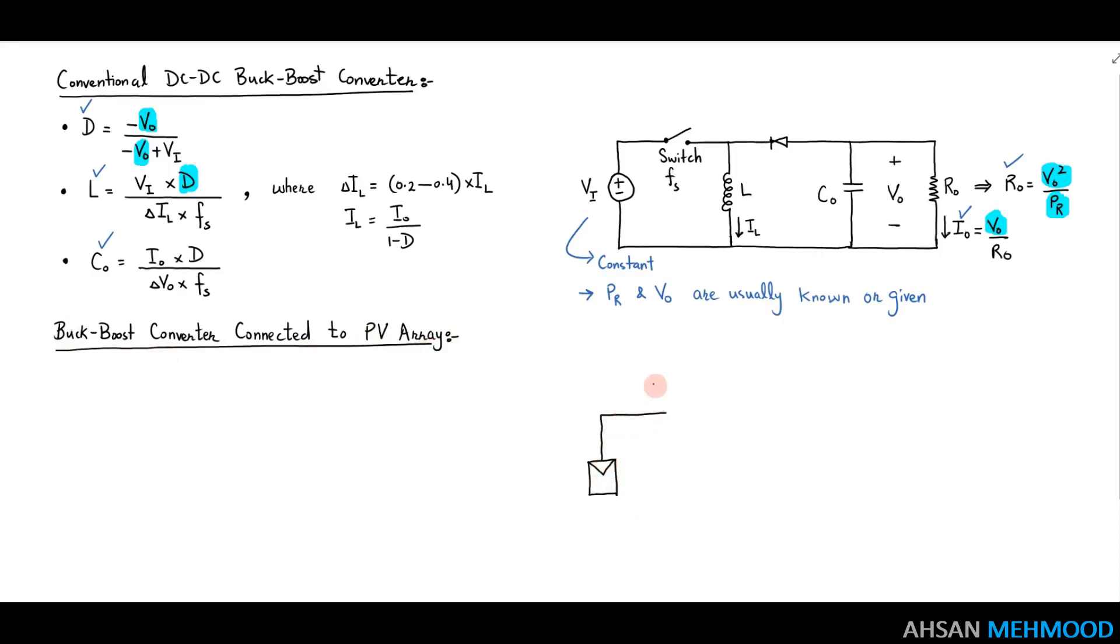Now consider a photovoltaic system in which the PV array is connected to a buck boost converter. Because the value of array power and voltage vary from 0 watt to maximum power and 0 volt to open circuit voltage,